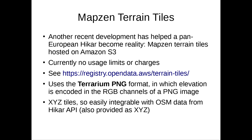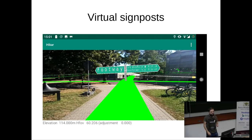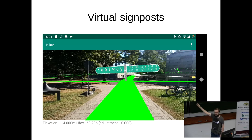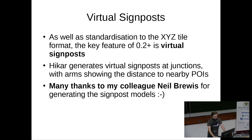Moving on to a new feature: virtual signposts. This is a screenshot from the campus here in Heidelberg, so if you want to try HiCar you can test it on campus. That's an example of a virtual signpost, literally more or less outside the chemistry building. Quick thanks to my colleague Neil Brewis for generating the 3D models — I'm not a 3D modeler.